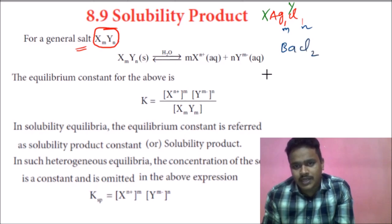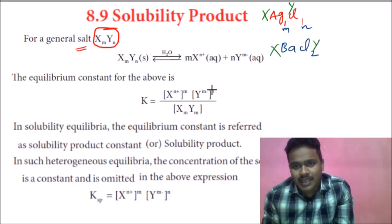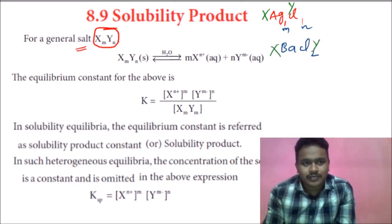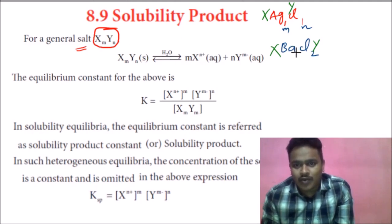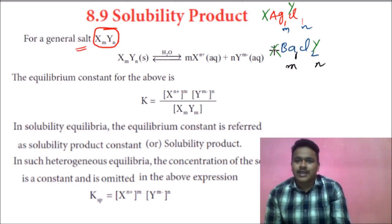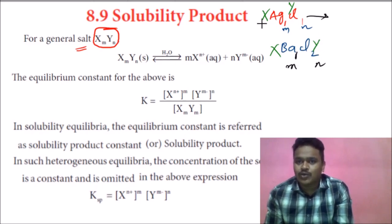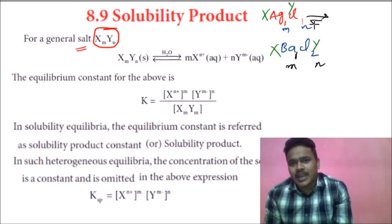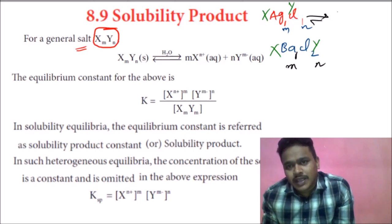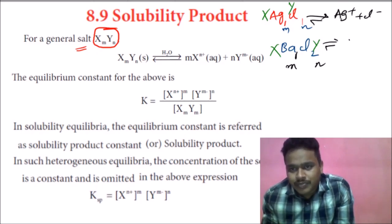Another example: BaCl2. Here Ba is like X and Cl is like Y. In BaCl2, the subscript for Ba is 1, so m = 1, and the subscript for Cl is 2, so n = 2. So for BaCl2 written as XmYn, we can write: Ba²⁺ + 2Cl⁻. Similarly for AgCl: Ag⁺ + Cl⁻.